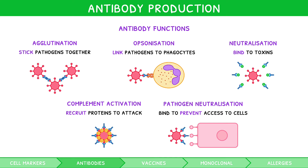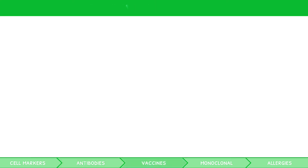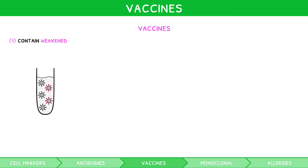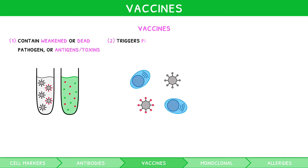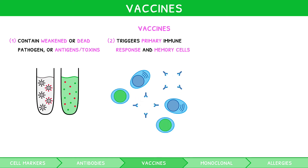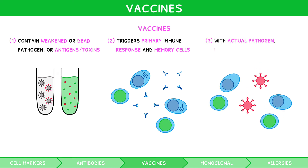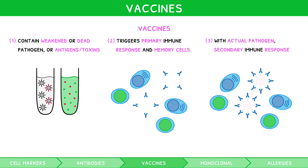Our body produces plenty of antibodies in the secondary immune response. But what if there is a disease that could kill us during the primary response? Well, this is where vaccines are vital. Vaccines are injections which contain either a weakened (attenuated) or dead pathogen, or the antigens or toxins present on its surface. They trigger a primary immune response and the production of memory cells. However, as the pathogen was weakened, dead, or missing, this is done with minimal symptoms and no risk of disease. This means that if the actual pathogen is encountered, we trigger a secondary immune response immediately, killing the pathogen before symptoms and the disease can develop.